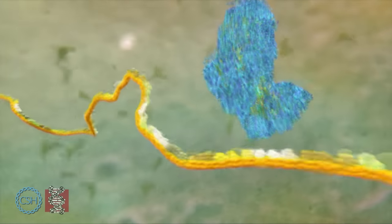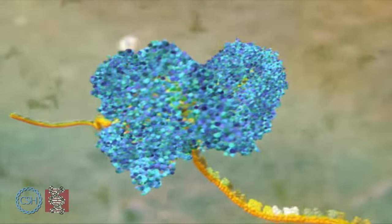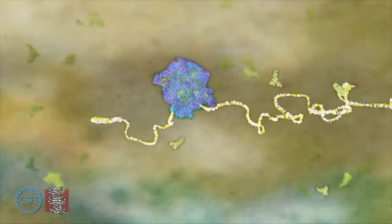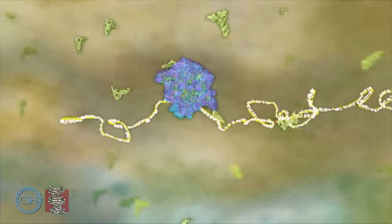Then all the components of a molecular factory called a ribosome lock together around the RNA. It translates the genetic information in the RNA into a string of amino acids that will become a protein.